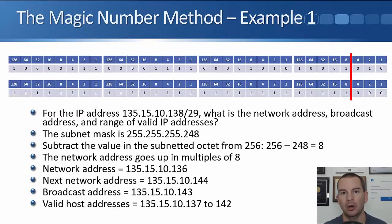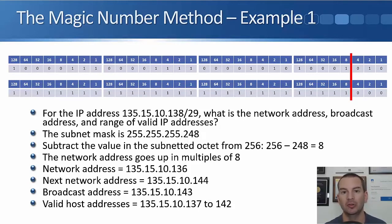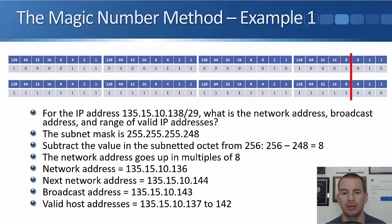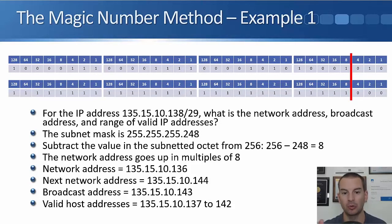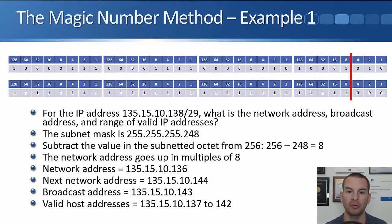Another popular way of calculating the network address, broadcast address, and host addresses is by using the magic number method — you'll see this cited in quite a few places on the internet. This is very handy if you've been given the subnet mask in dotted decimal notation rather than with a slash, because in that case you can usually figure it out in your head. A /29 written in dotted decimal notation is 255.255.255.248.